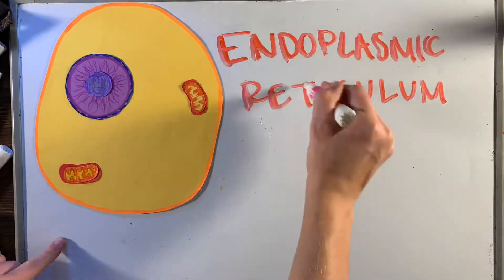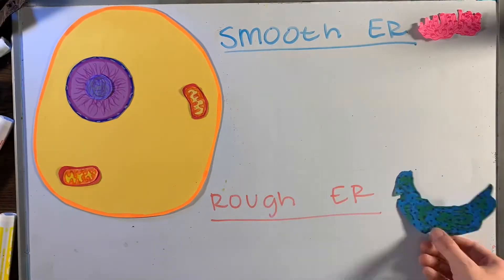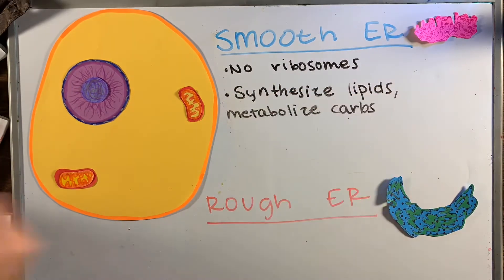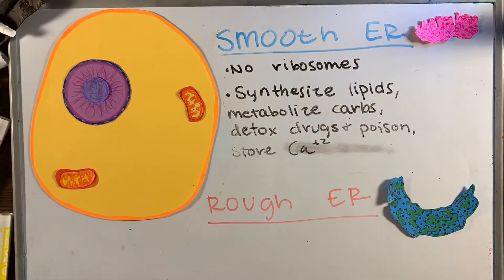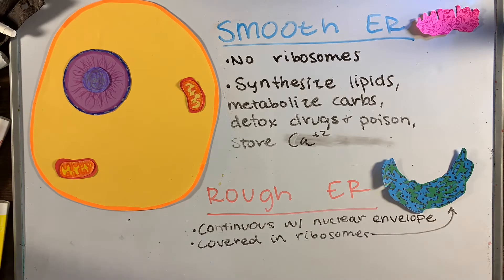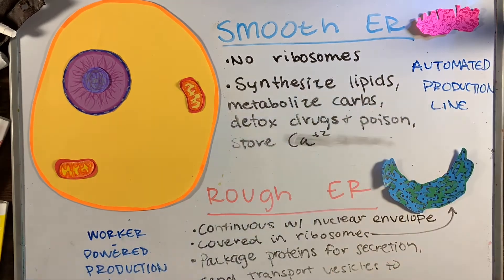Now let's look at another organelle found in any eukaryotic cell — the endoplasmic reticulum. There are two kinds: smooth ER and rough ER. The smooth ER has no ribosomes; its job is to synthesize lipids, metabolize carbs, detox drugs and poisons, and store calcium ions. The rough ER, on the other hand, is continuous with the nuclear envelope, surrounds the nucleus, and is covered in ribosomes. Its job is to package proteins for secretion and send transport vesicles to the Golgi apparatus. In the cell factory, the rough ER would be the worker-powered production line and the smooth ER would be like an automated production line.